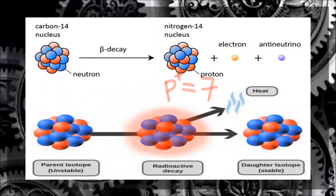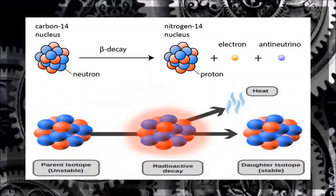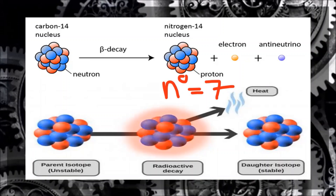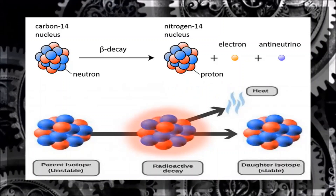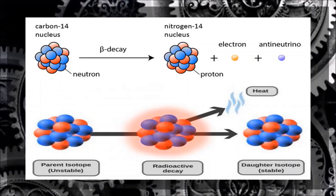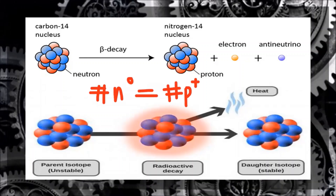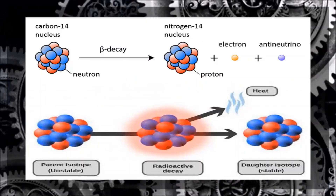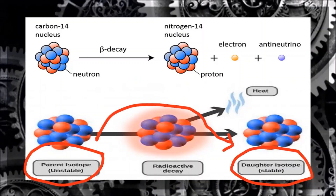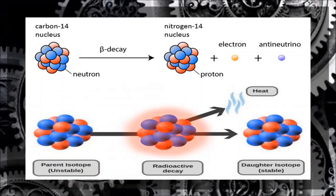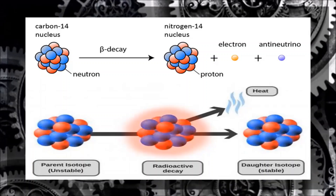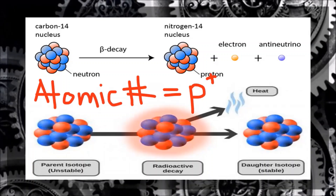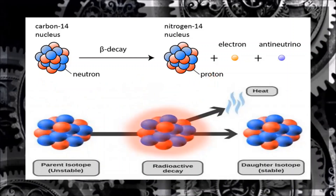There are now seven protons in nitrogen-14, and seven neutrons as well. The number of protons and neutrons in nitrogen-14 is equal, which is why nitrogen-14 is a stable element. Nitrogen-14 is considered the daughter atom of carbon-14. Always remember that the number of protons determines the atomic number of an element — the seventh element on the periodic table is nitrogen, which confirms the product of this decay is nitrogen-14.